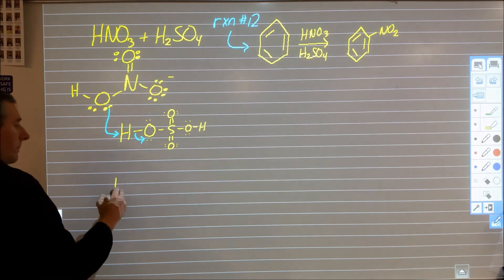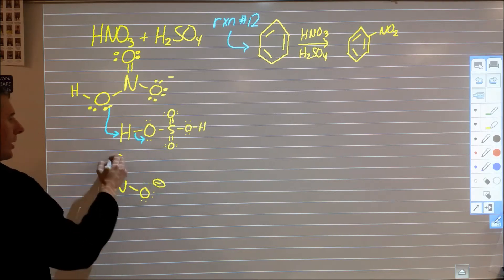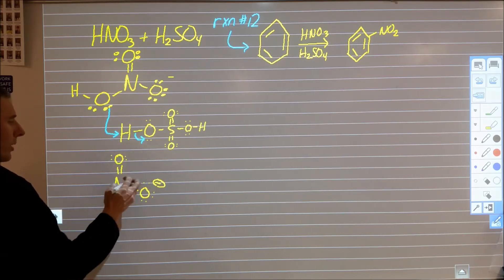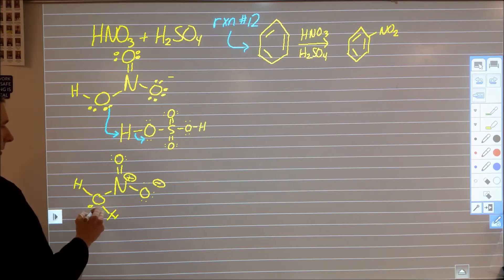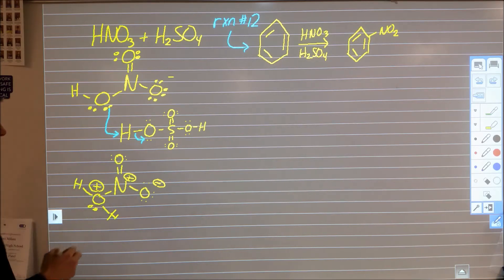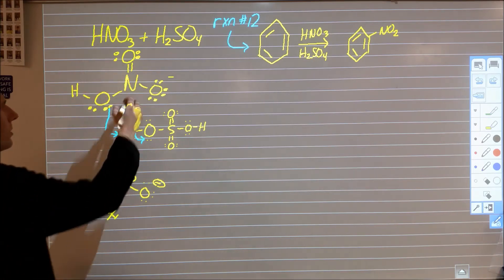We're going to redraw the nitric acid: double bond oxygen, single bond oxygen, negative formal charge here, no formal charge here, positive here, and now we have the oxygen with the hydrogen attached and another hydrogen attached from earlier which gives that a positive formal charge. So by adding the H+ to this we give this an overall positive formal charge.